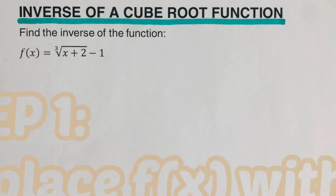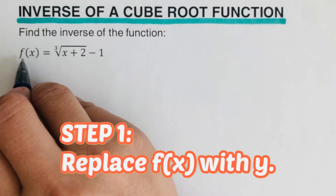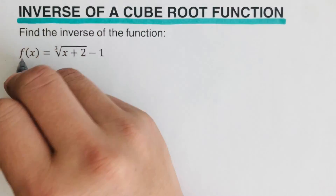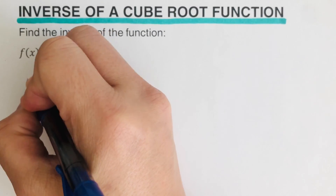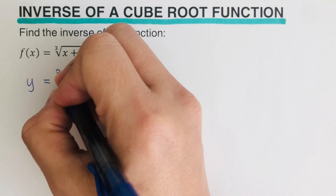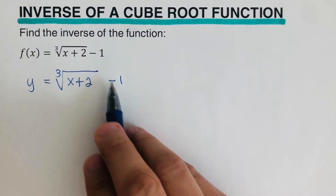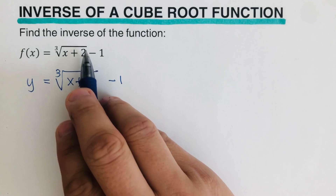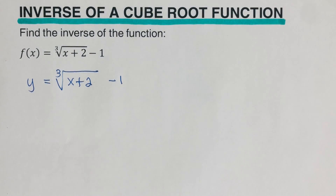The first step is to replace f(x) with y. So in this problem, I can go ahead and rewrite this as: y is equal to the cube root of x plus 2, minus 1. Notice that minus 1 is outside of this radical.